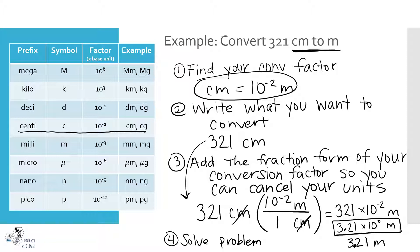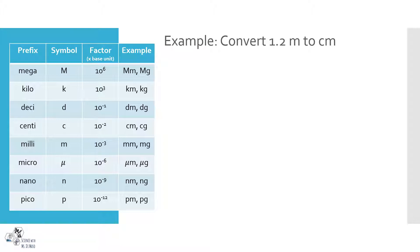Always check if your answer makes sense. There are 100 centimeters in one meter, so 321 centimeters being around 3.21 meters makes sense. If I had gotten 3,000 meters that wouldn't make sense. Always use common sense at the end. For the next example I won't write down all four steps, so you may want to have them in your notes to refer back to when doing these problems.